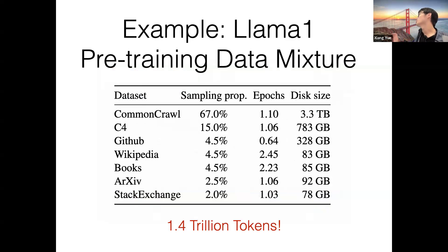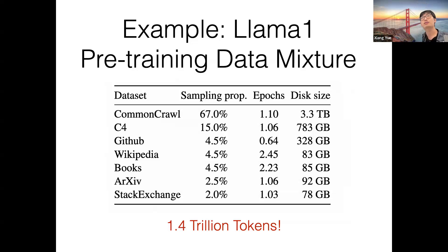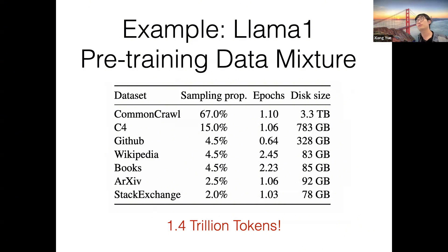Here's an example of LLaMA 1's pre-training data mixture. They have 1.4 trillion training tokens in total, covering the data sources I just mentioned. This table also gives an overview of how large the pre-training corpus is. Storing these 1.4 trillion tokens takes about 4 to 5 terabytes. For some higher-quality sources like Wikipedia and books, they train with multiple epochs instead of one, because those data sources are higher quality than web data.